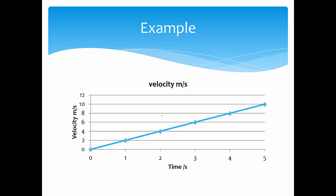What I mean by acceleration is this profile: the object is always changing its velocity over time — from 0 to 2 to 4, 6, 8, 12 — constantly changing. How do we find displacement? We can estimate it by treating each interval as a flat line: estimate flat at 2, flat at 4, flat at 6 and 8. This is one way to estimate the distance or displacement traveled.